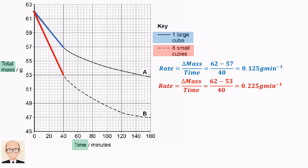Now we have the rates of osmosis for each set of cubes, we need to divide these by the total surface areas of potato in each case.